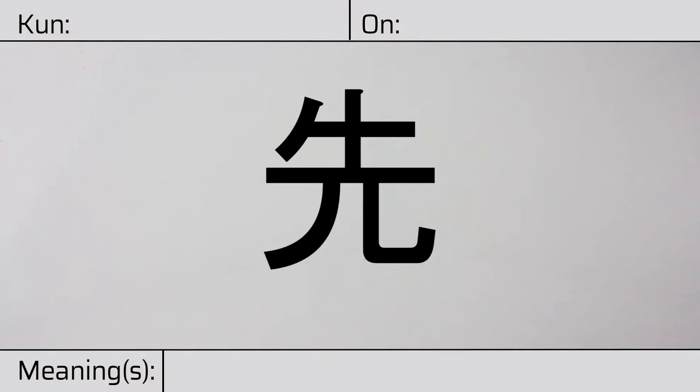Welcome to this lesson on Japanese kanji. Today, we'll be discussing this character. This kanji has kunyomi or Japanese readings of saki or ma.